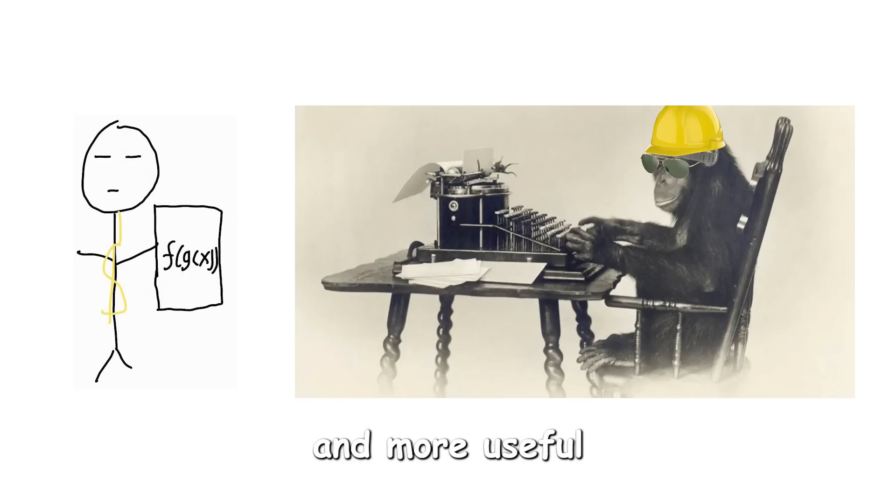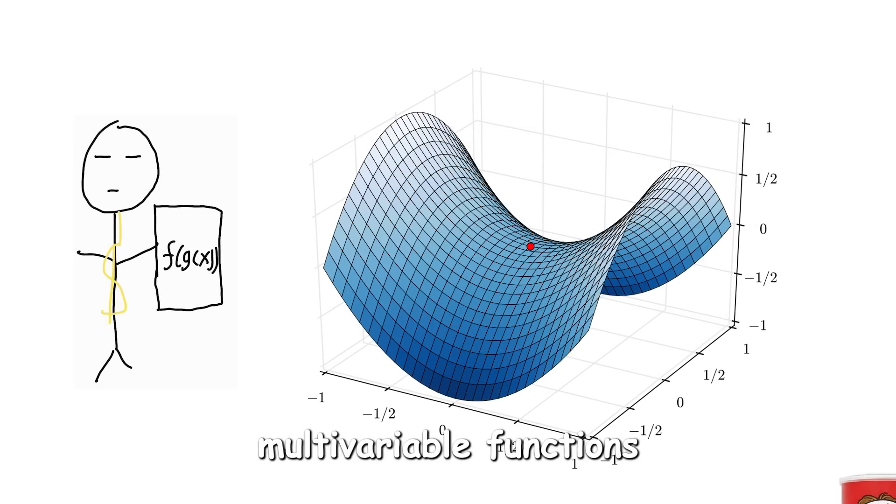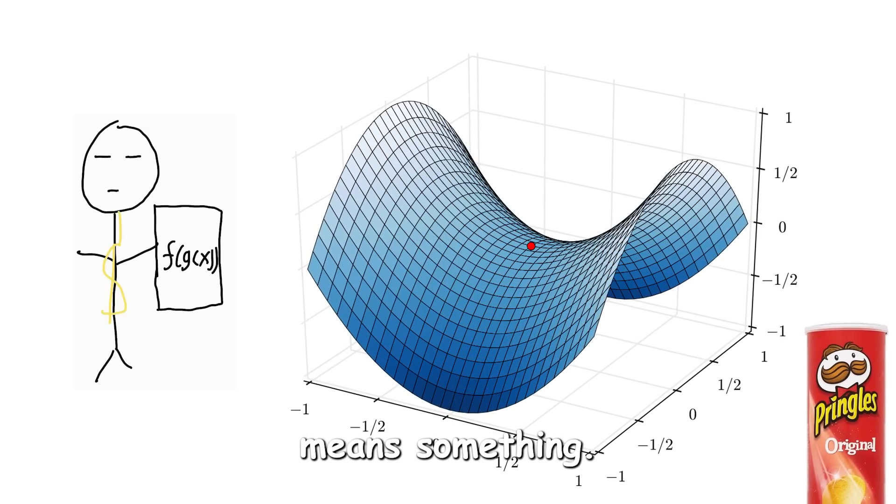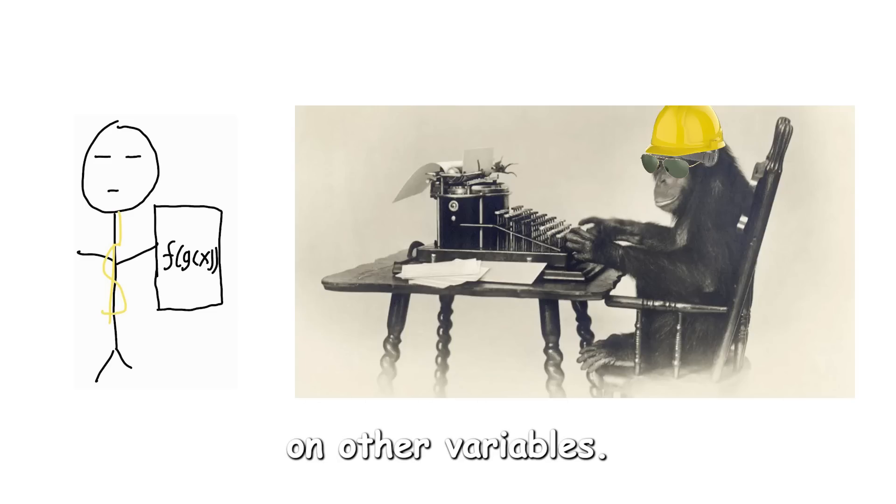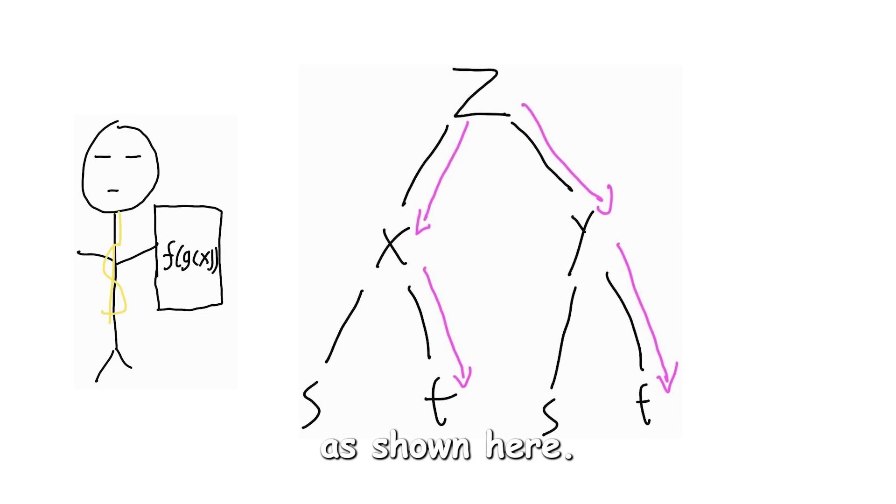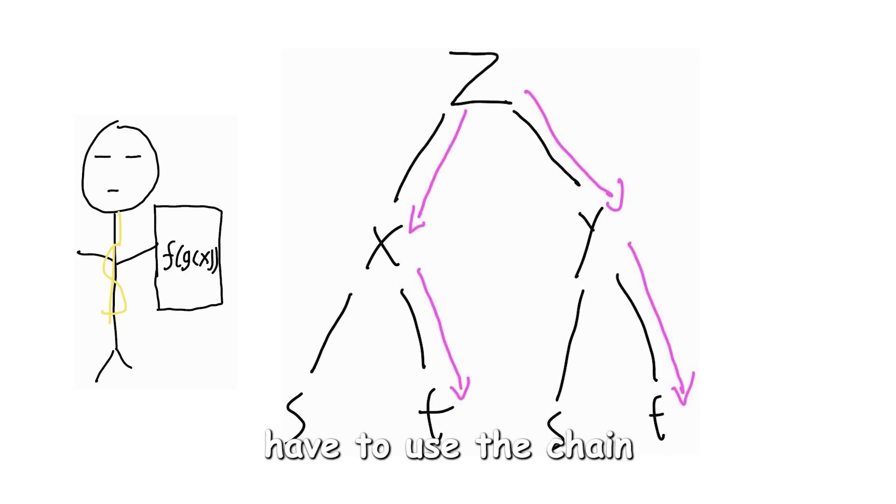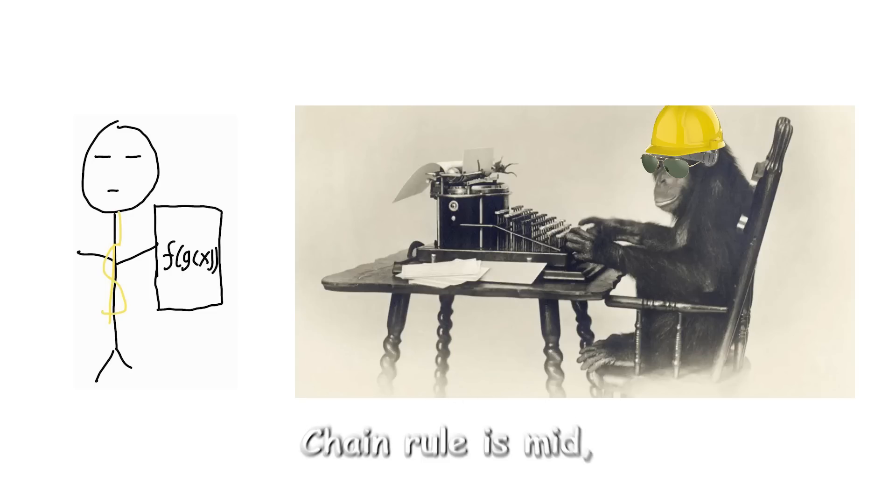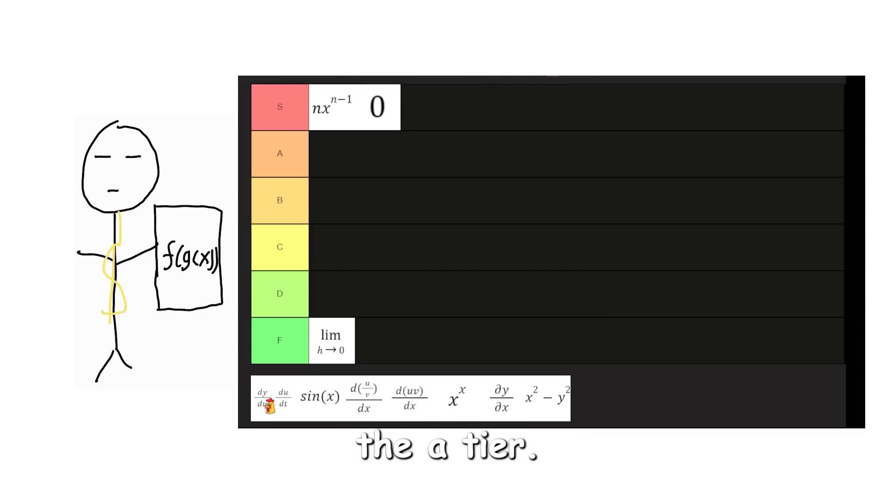Chain rule gets interesting and more useful when you start doing multivariable functions where chain rule actually means something. Dependent variables can be dependent on other variables. Think of it as a tree, as shown here. This is when you have to use the chain rule. For single variable functions, chain rule is mid, but with multivariable functions it's much cooler, so I will give it the A tier.